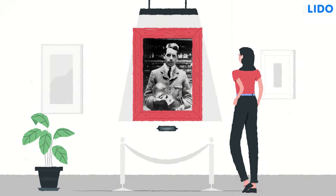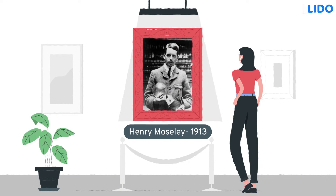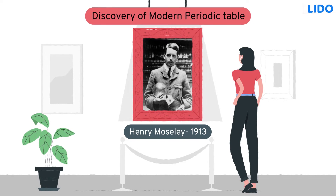In the year 1913, an English physicist, Henry Moseley, contributed significantly towards developing the modern periodic table. Let's see what his experimental setup and observations are.